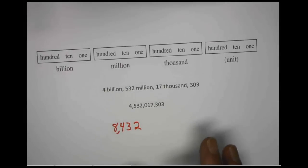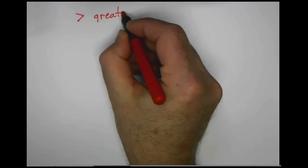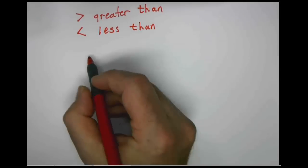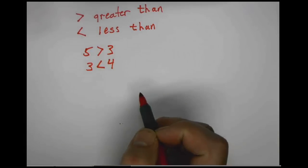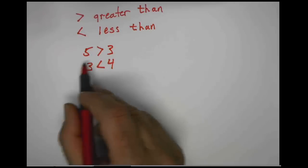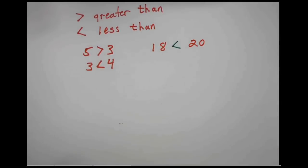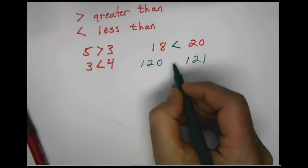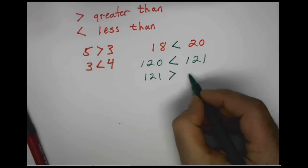The next goal is to talk about inequalities — to write an inequality statement about two numbers. An inequality is going to either be a greater than sign or a less than sign. We would read this as '5 is greater than 3' or '3 is less than 4,' reading left to right. So if we're asked to compare two numbers, 18 or 20, we would say 18 is less than 20. So if we had 120, compared to 121, we would say 120 is less than 121, or 121 is greater than 120.